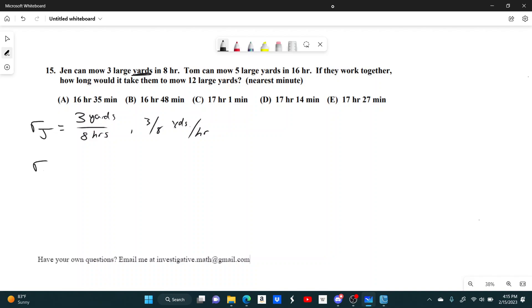And then for Tom, it's a similar deal. He can mow 5 large yards in 16 hours. So his rate is 5 yards per 16 hours, or alternatively, 5 sixteenths yards per hour.